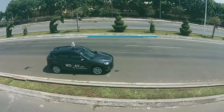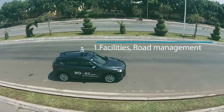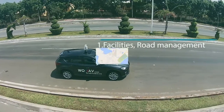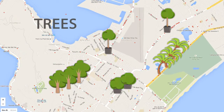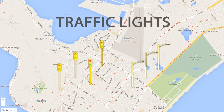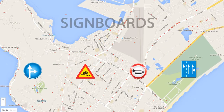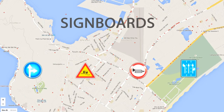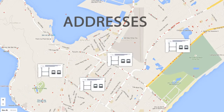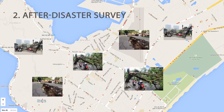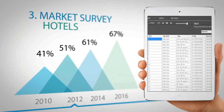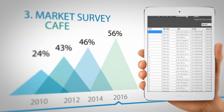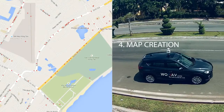Applications of WONAP CT include road management facilities such as trees, traffic lights, signboards, and addresses. After a disaster survey, WONAP CT can help evaluate and manage property damage following storms and earthquakes. It also supports marketing surveys covering hotels, restaurants, cafes, and shops, as well as map creation.